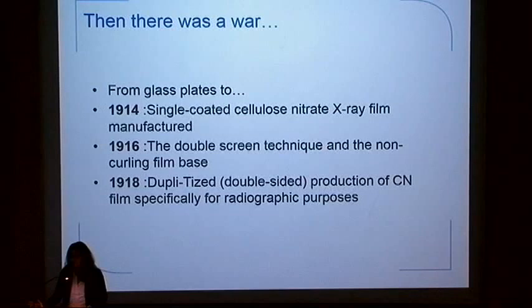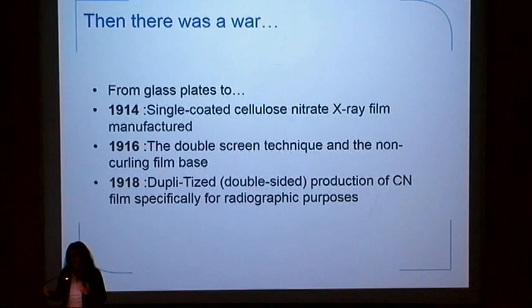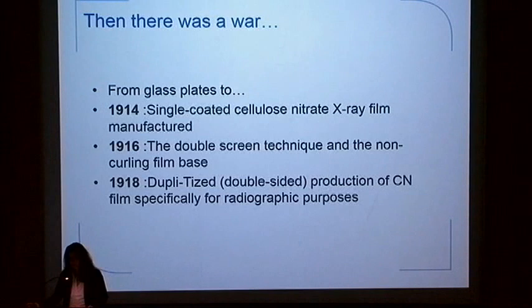Therefore, in 1914 we have the introduction of the single-coated cellulose nitrate x-ray film. However, that was problematic because it curled extensively, causing difficulties in developing the radiographic image. This led to the double-screen technique by 1916 and the addition of a non-curling film base.